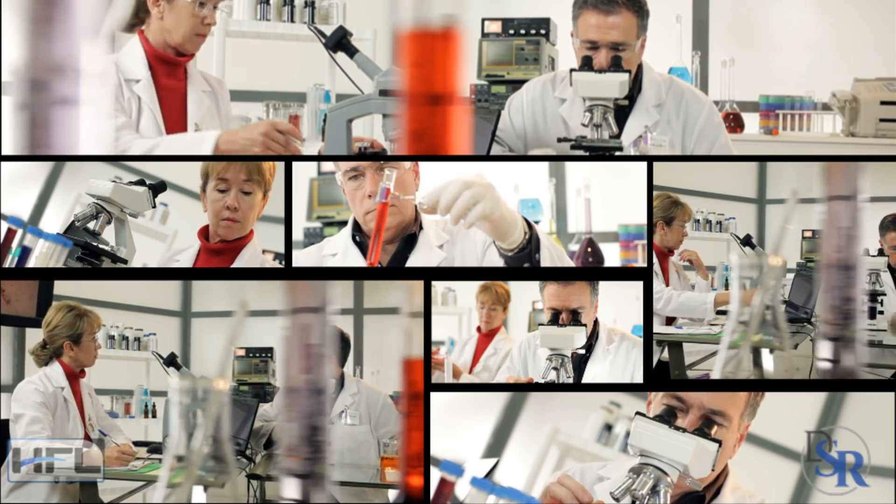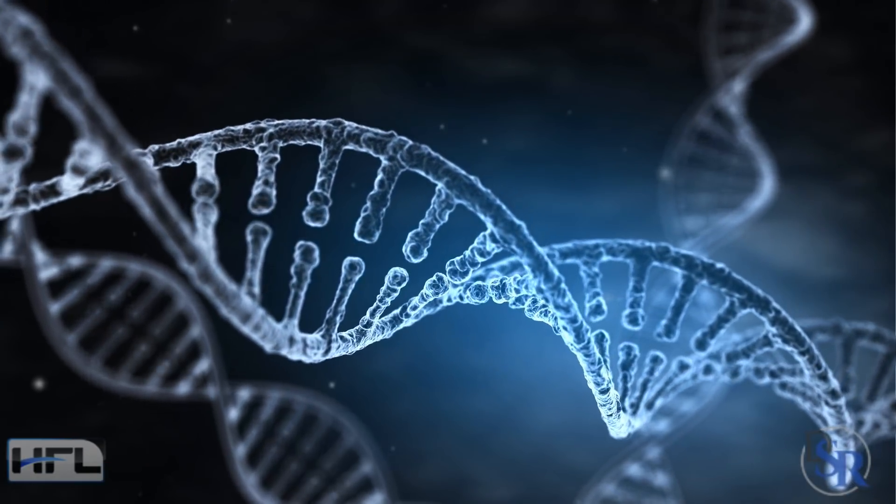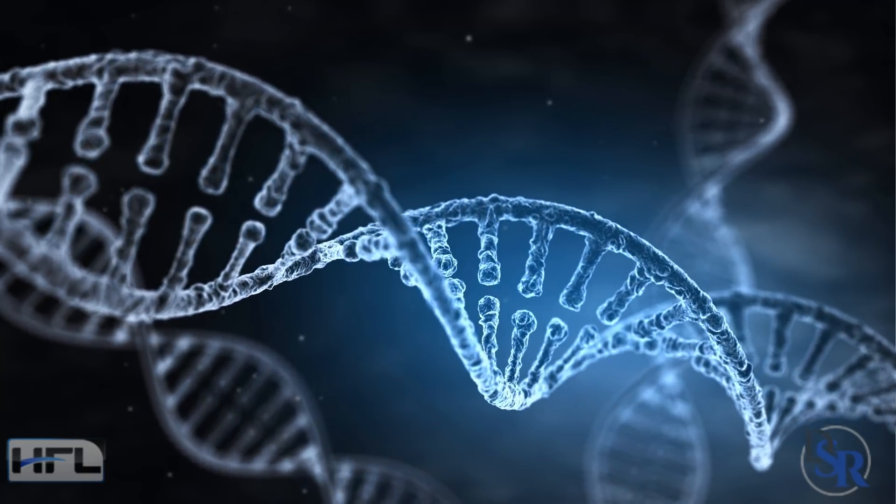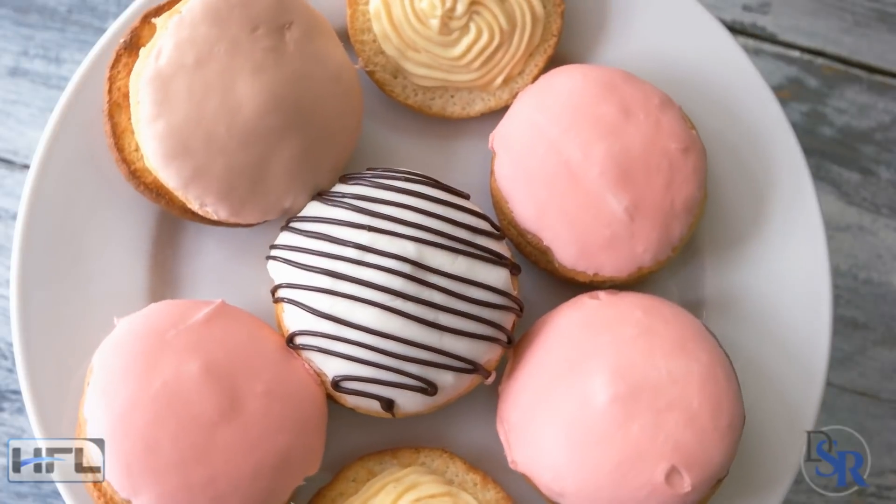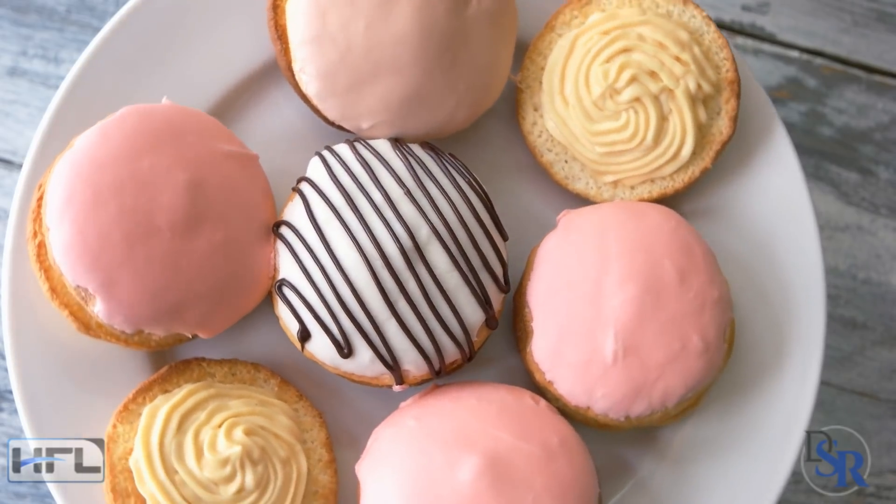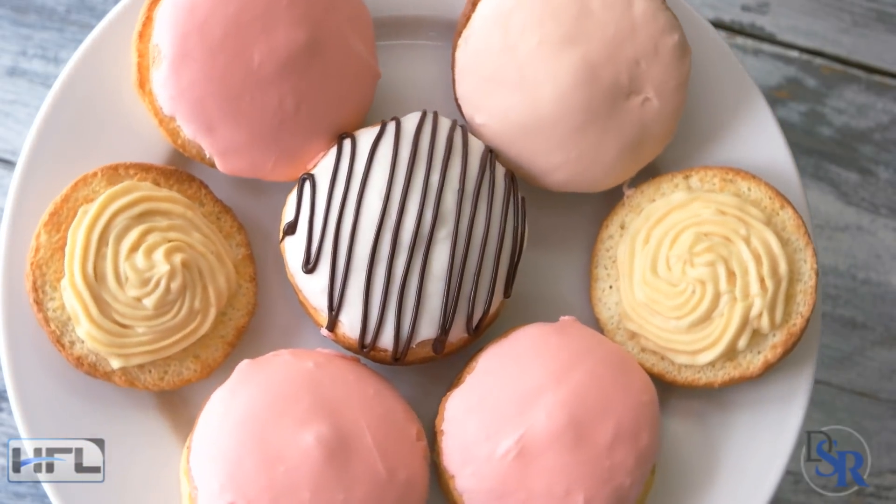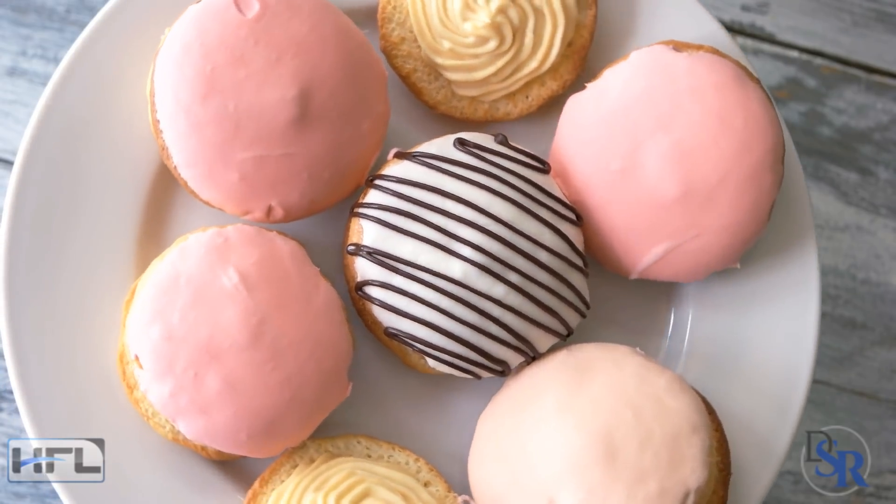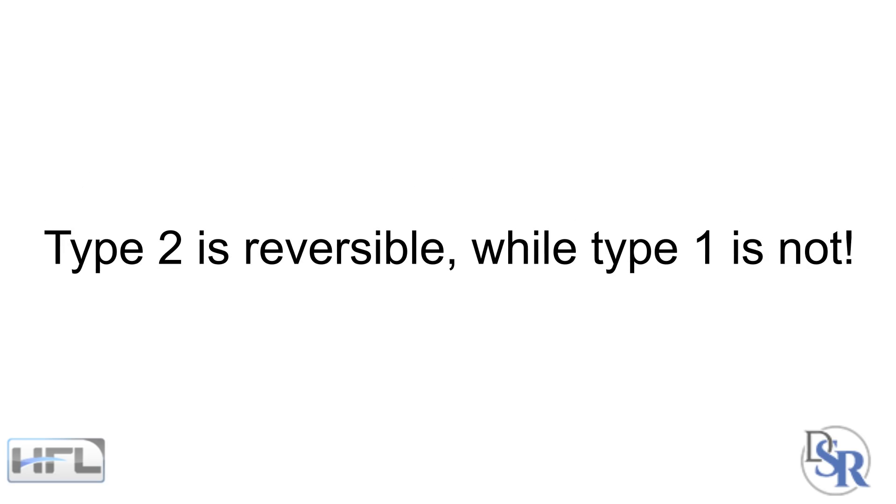Just a quick overview: Type 1 diabetes is more genetic-based, an autoimmune disease where you need to take insulin for the rest of your life. Type 2 diabetes is more lifestyle-related, which can be controlled with diet, pills, or insulin injections. The good news is that it is reversible, while type 1 is not.